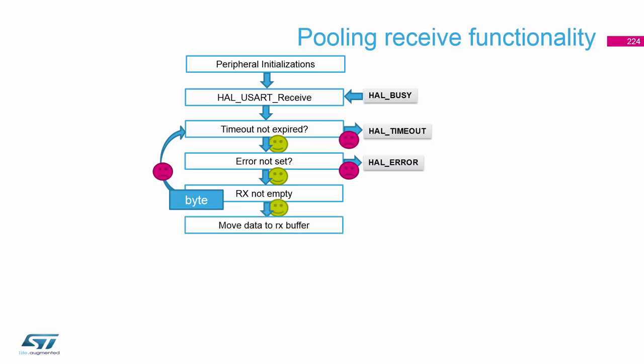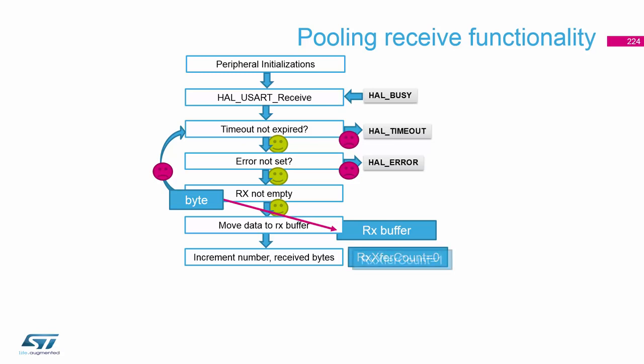Then we move this byte into the RX buffer which we selected in the handle. We increment the number of receiving bytes. Now we received one byte and we check if we received all the bytes which we wanted.